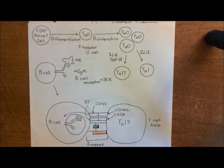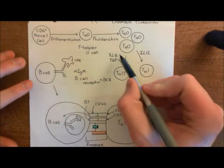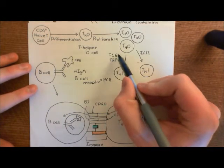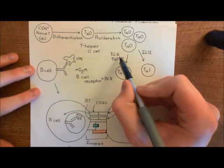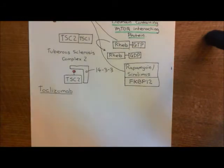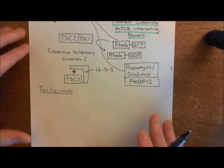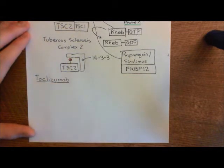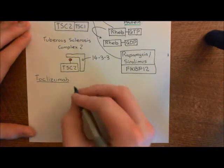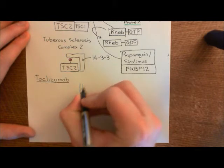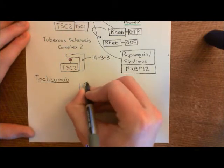This drug Tocilizumab is going to be a monoclonal antibody against human interleukin-6. So it will bind to interleukin-6, mop up the interleukin-6, and the idea is that you can stop the T helper naught cells from differentiating into T helper 17 cells.